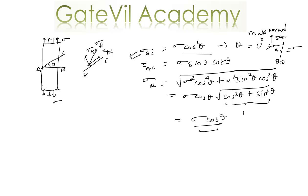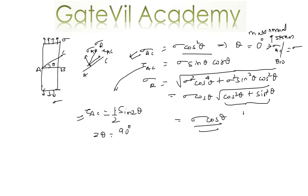For tau AC, you can multiply and divide by 2 to get (Sigma/2) sine 2 theta, because 2 sine theta cos theta equals sine 2 theta. The maximum value of this shear stress will come when angle 2 theta equals 90 degrees, so at theta equal to 45 degrees you get the maximum shear stress as Sigma by 2.